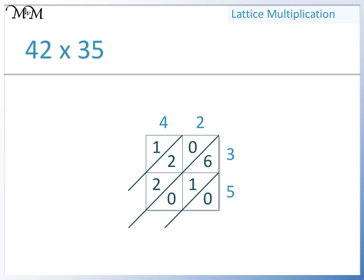Now that we have multiplied all of the digits, we will add up the digits in each diagonal. In the first diagonal, we only have 0, so we write 0 here. In the next diagonal, we have 0, 1, and 6, which makes a total of 7. Next, we have 2, 2, and 0, which makes a total of 4. Finally, we have 1 in this diagonal, so we write 1. The digits we have are 1, 4, 7, and 0. So 42 times 35 equals 1470.